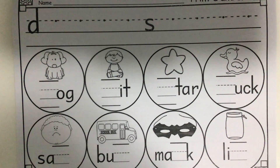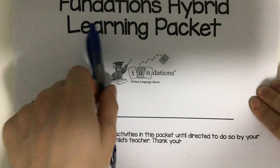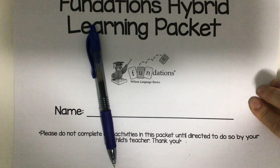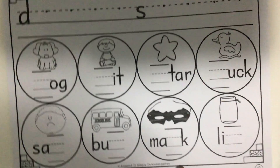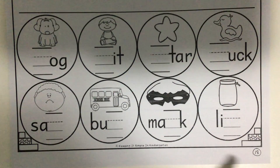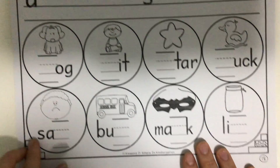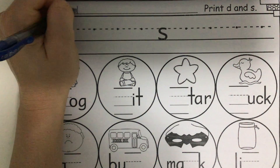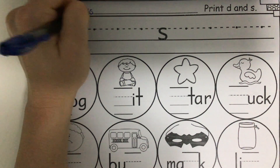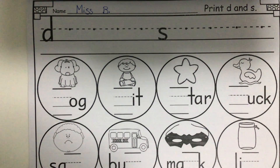So for today's activity, I need you to get your Fundations Hybrid Packet and a pencil. Press pause, go get those things, and press play when you're ready to start. Open up your Fundations Packet to page 18. 18 is 1 with an 8. When you get there, go ahead and put your name at the top. The first thing we do is always the same — we pick up our pencil and we write our name.